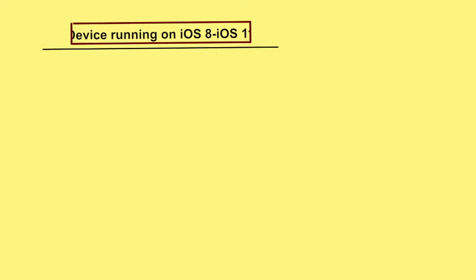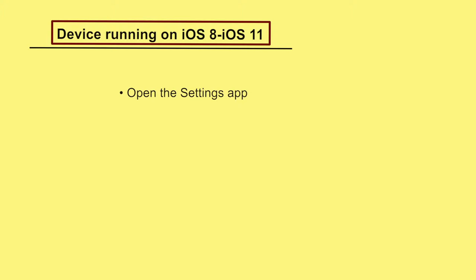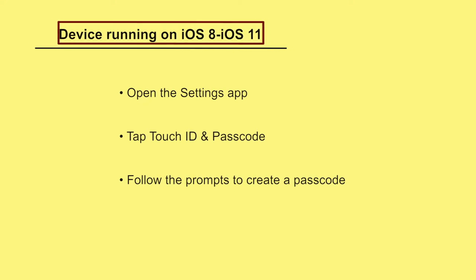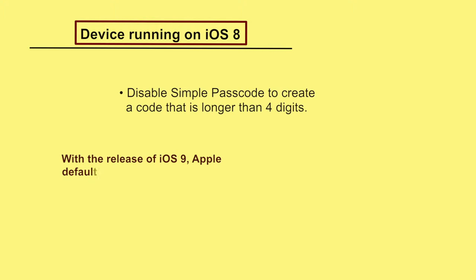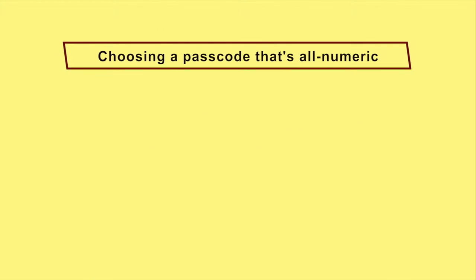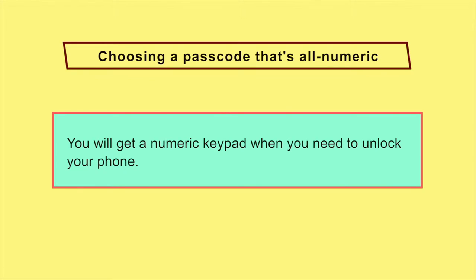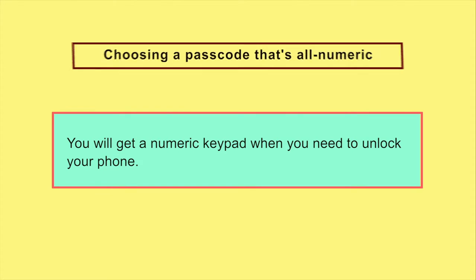If your device is running on iOS 8, disable simple passcode to create a code that is stronger and longer than 4 digits. With the release of iOS 9, Apple defaulted to a 6-digit passcode. If you choose a passcode that's all numeric, you will get a numeric keypad when you need to unlock your phone, which may be easier than typing a set of letters and symbols on a tiny virtual keyboard.